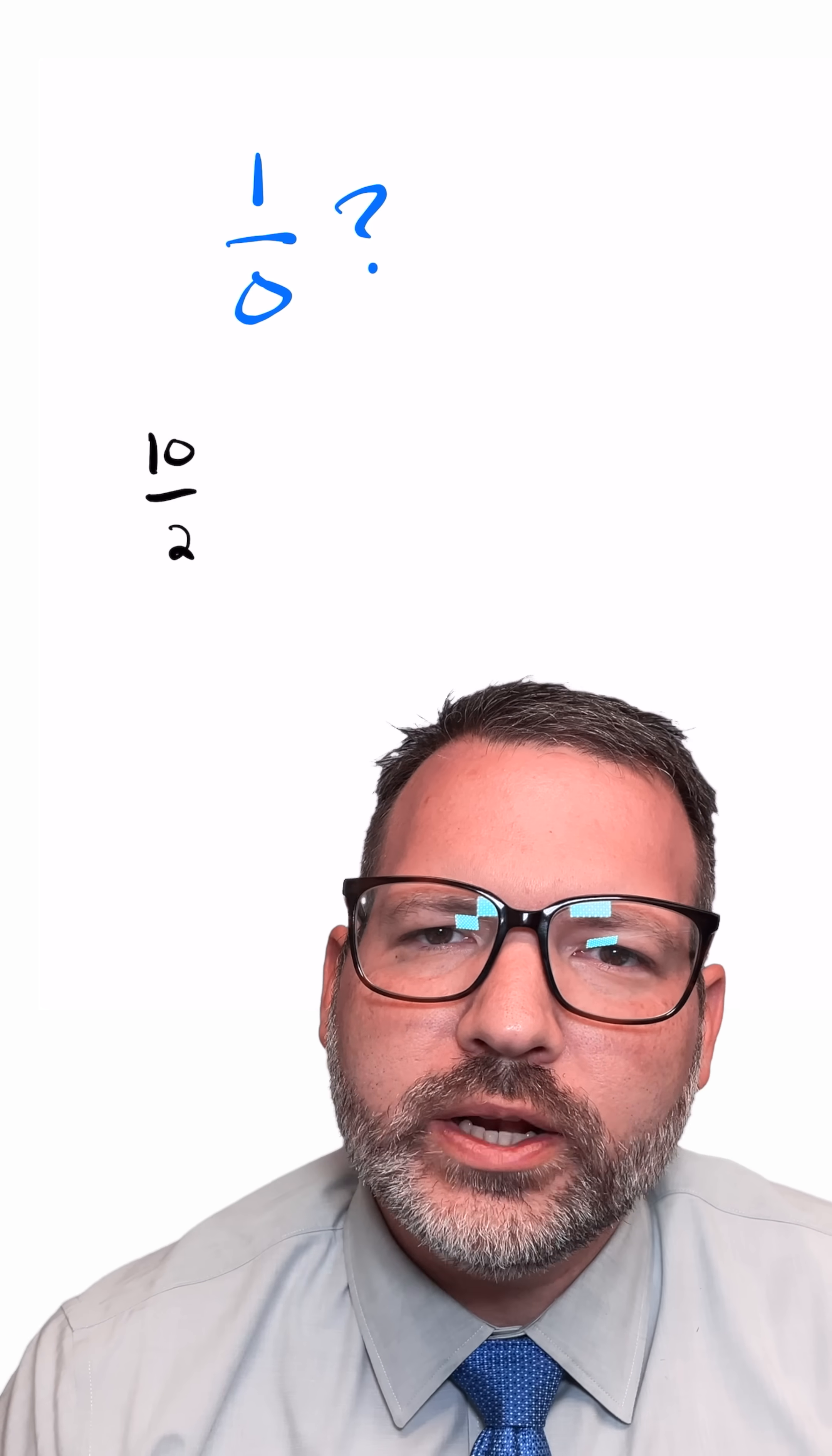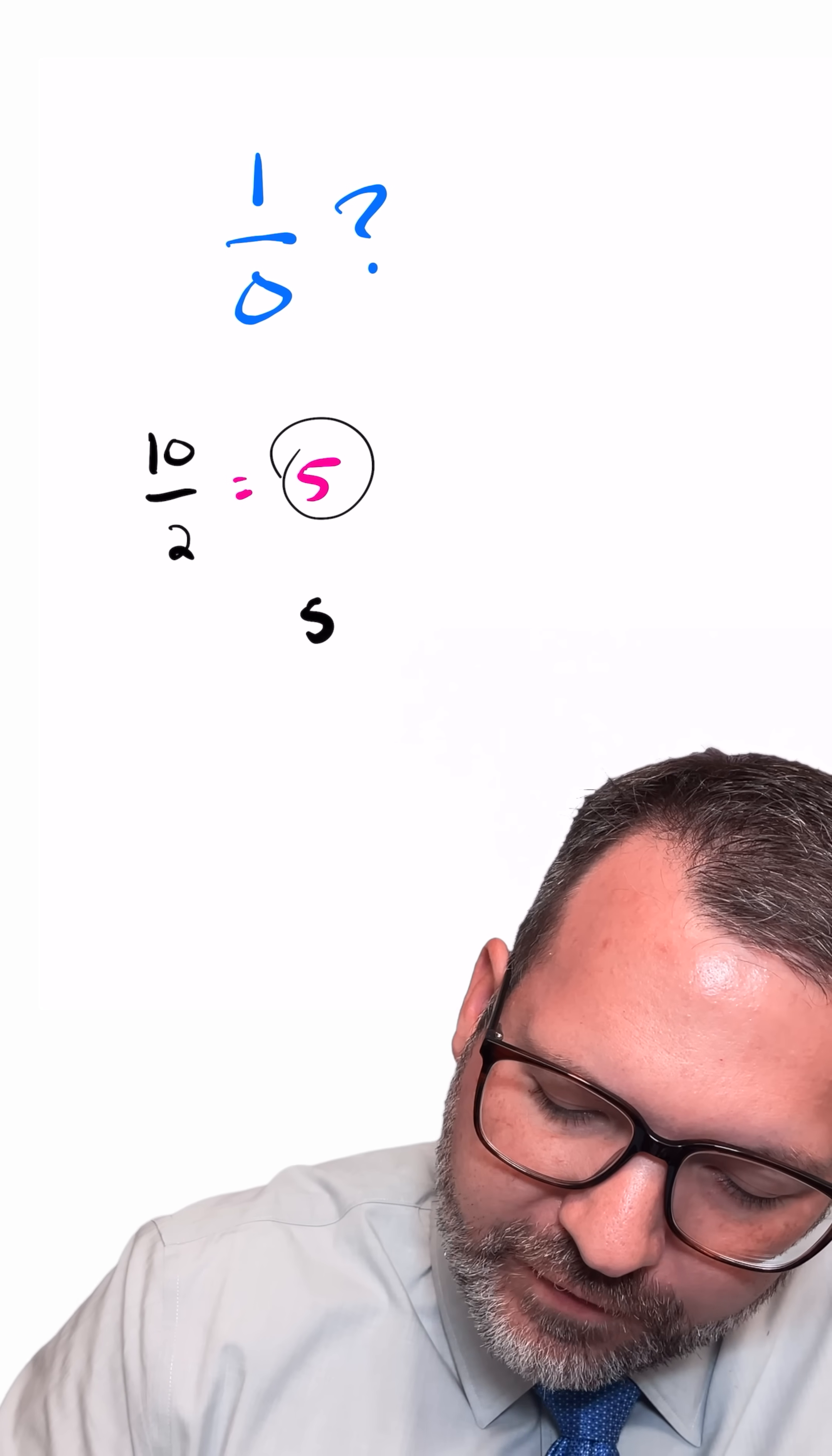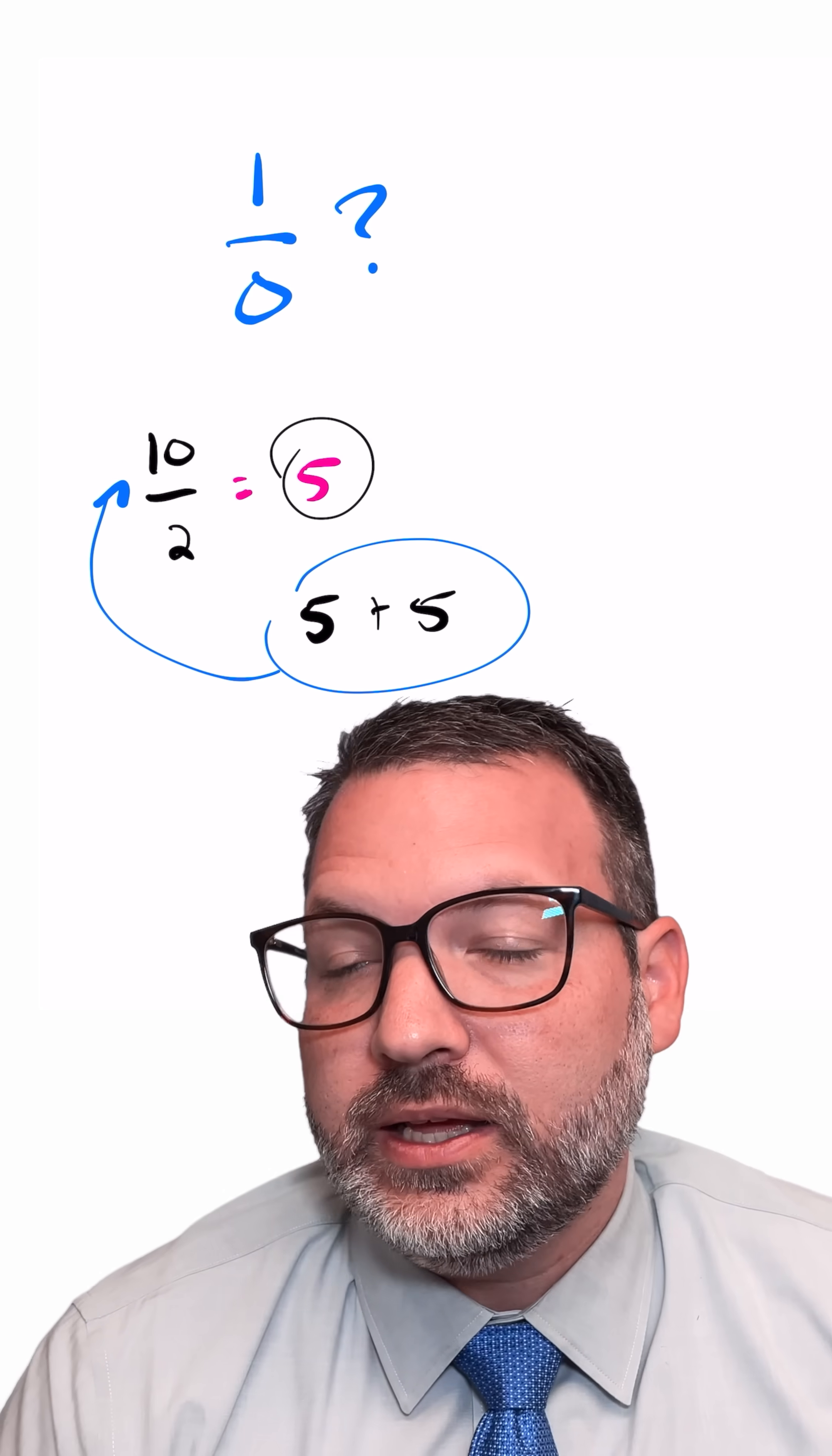Go back for a second to what division actually is. One thing we mean when we say 10 divided by 2 is 5, is that if we took two groups of 5 and added them together, they would give us back our original dividend of 10, the number that we were trying to divide, in this case, into two groups.